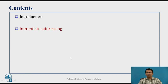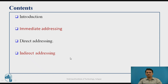We will cover a brief introduction, then immediate addressing, direct, and indirect addressing. Let us first understand what we mean by addressing mode. Whenever you are doing operations using the PIC microcontroller — for example, arithmetic operations — you require operands. An operand may be available in the data memory, or one operand may be in the working register itself.